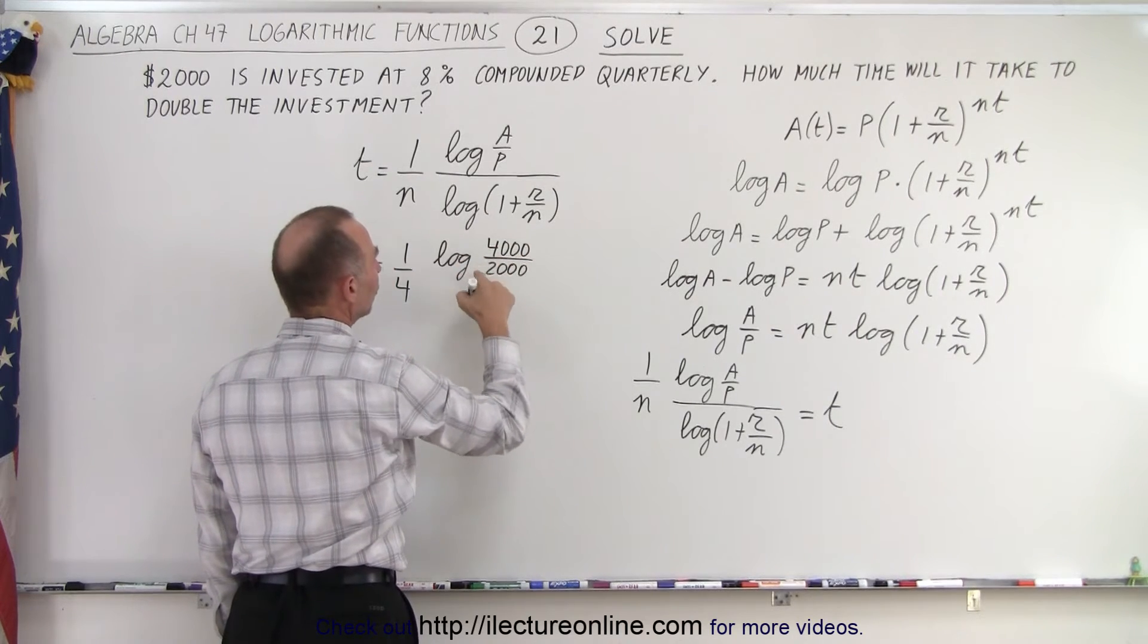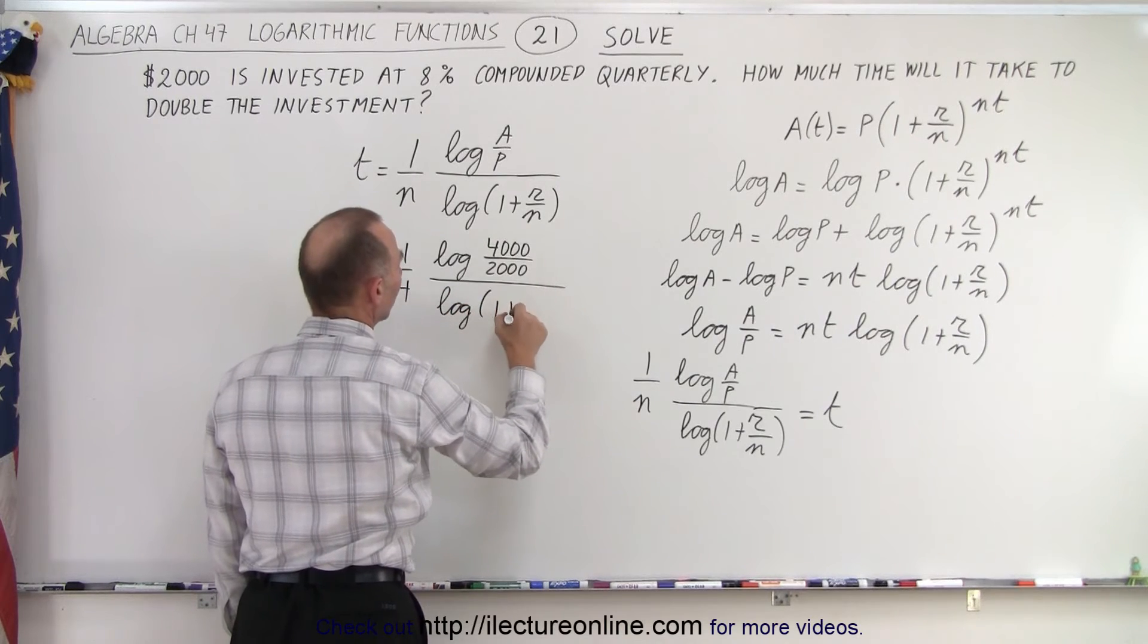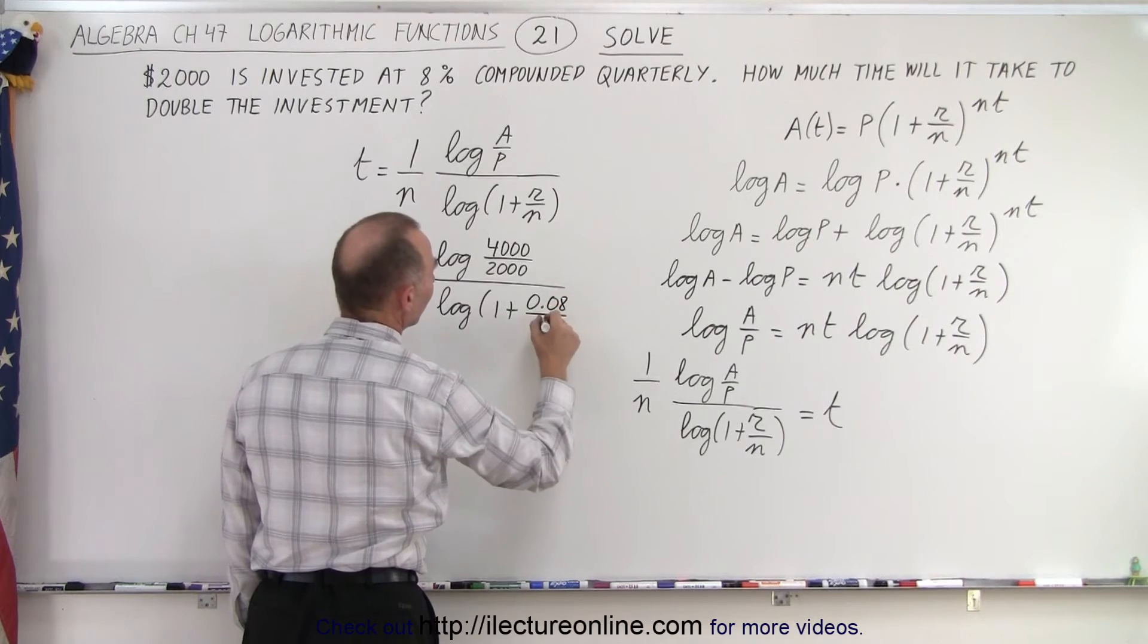So we have the log of 4,000 over 2,000 divided by the log of 1 plus the rate, which is 0.08 divided by 4.